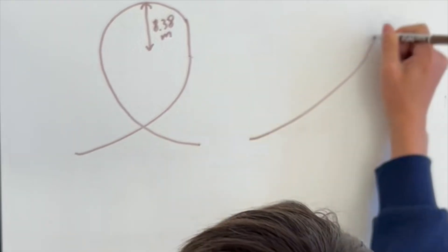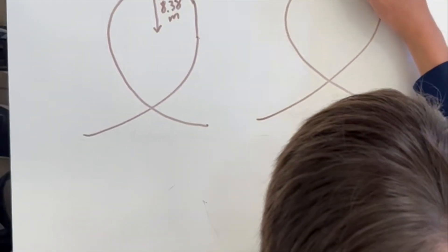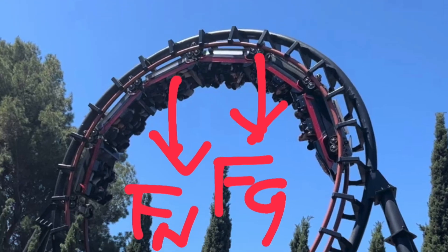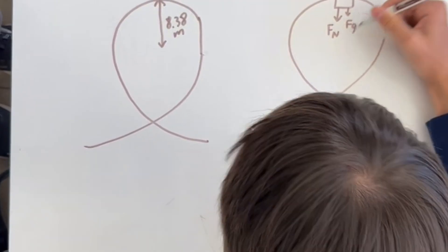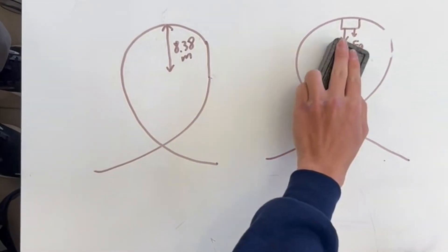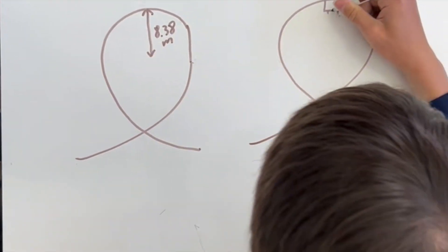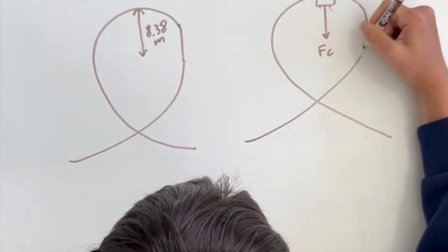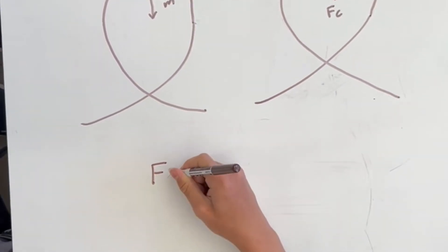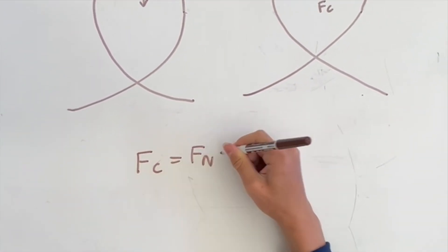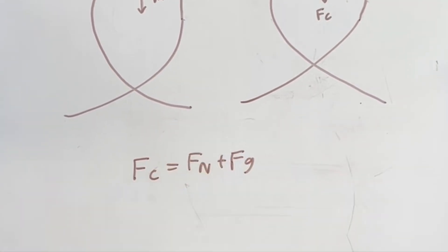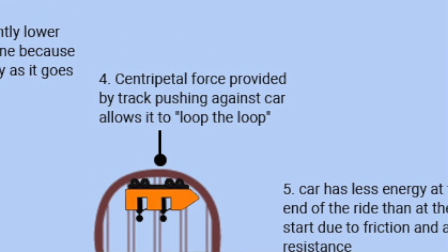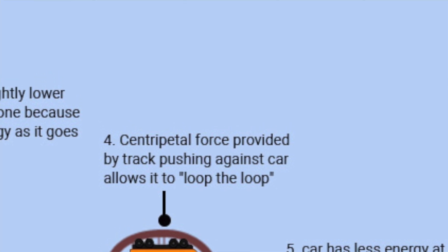The free body diagram of the cart at the top of the loop is both the normal force and the force of gravity pointing downwards, summing up to the net force in circular motion, also known as the centripetal force. And we are writing our equation that Fc equals Fn plus Fg. And then here, we're going to replace it by the quantities Fc equals mv squared over r equals Fn plus mg.